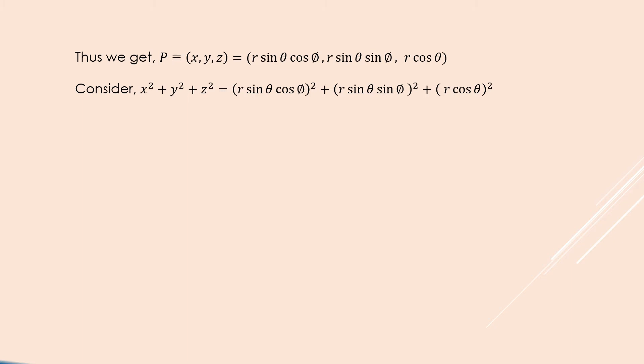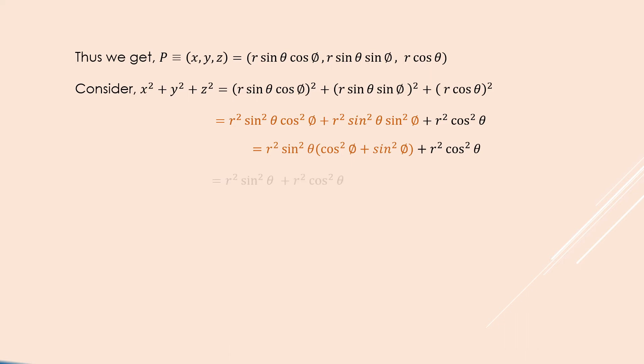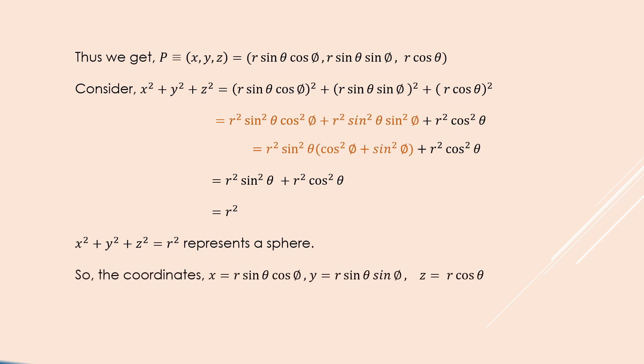Thus, a Cartesian point (x, y, z) can be represented as (r·sin(theta)·cos(phi), r·sin(theta)·sin(phi), r·cos(theta)). These r, theta, phi are called spherical polar coordinates. Considering x² + y² + z², after simplification it turns out to be r². As x² + y² + z² = r² represents a sphere, this coordinate system is referred to as the spherical polar coordinate system.